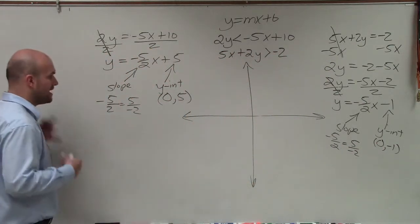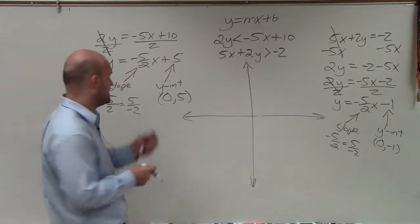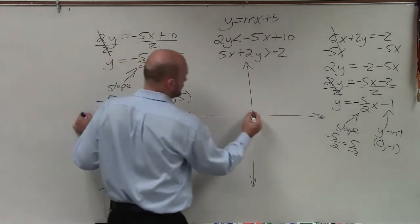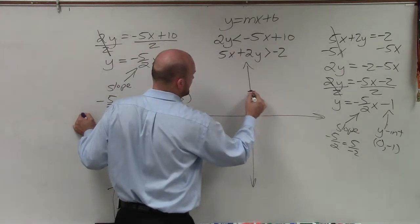So now that I know the y-intercept and the slope, I'm basically just going to plot the y-intercept and then use the slope to find the next point. So in this equation, I have 0, 5. So I'll go 1, 2, 3, 4, 5. Make my point.